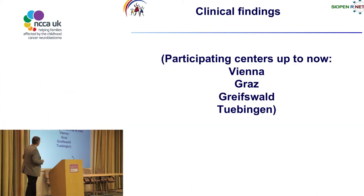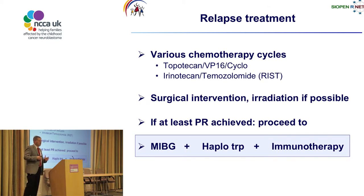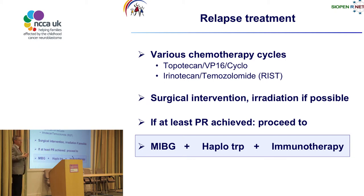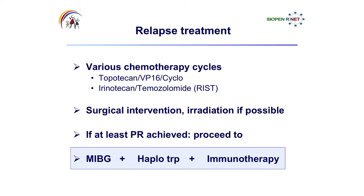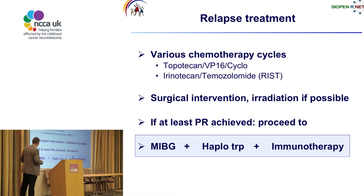Currently 4 centers participate in the study. Before transplantation, another remission or at least partial remission must be achieved. Various chemotherapy cycles have been used to induce remission: topotecan VP16 or cyclophosphamide from the German relapse protocol, or nowadays irinotecan temozolomide, which is considered very effective. If possible, surgical intervention or irradiation is performed prior to transplant to reduce tumor masses or bulky tumor. Once at least partial remission is achieved, patients proceed to another MIBG, the haplotransplantation itself, and the following immunotherapy.